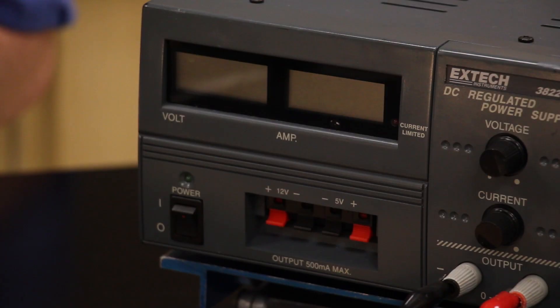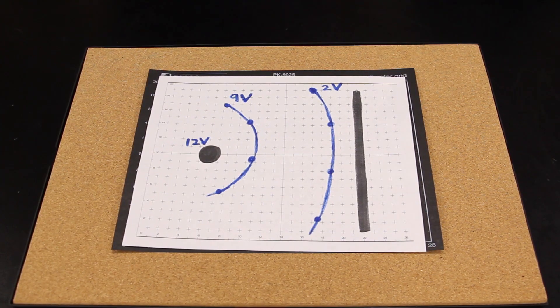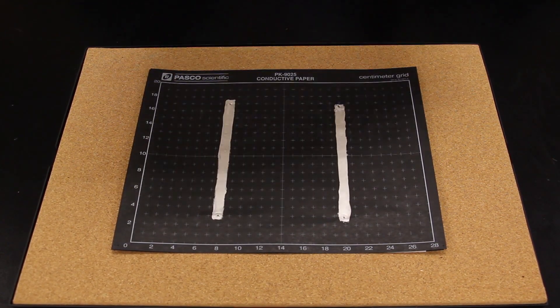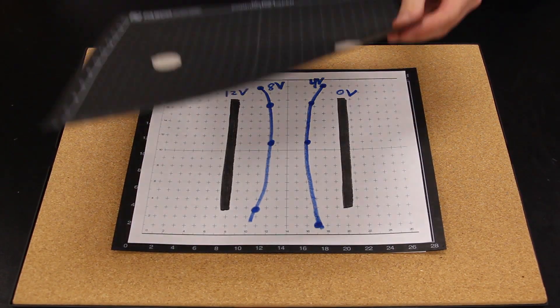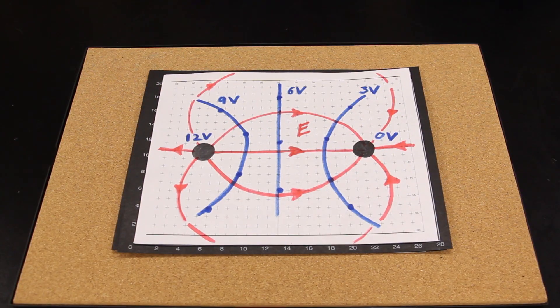A reasonable voltage to set is between 12 and 20 volts. This won't shock you, but the measurements will be easy enough because the numbers are large. The result is that you get these nice voltage maps. And since the electric field is perpendicular to the equal potential lines, you can map the electric field near these conductors. Experiment and get creative with your electric fields.